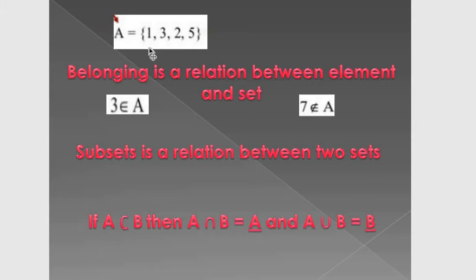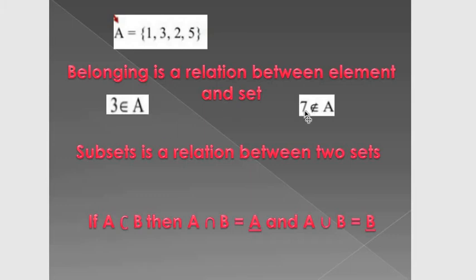If I have a set A = {1, 3, 2, and 5}, and I want to say the element 3 is included in the set A, I will say 3 belongs to A. And if I have 7, then 7 doesn't belong to A. This notation is called element membership.